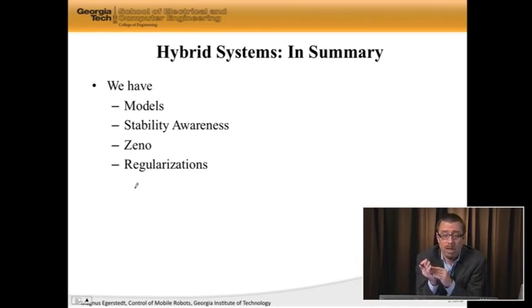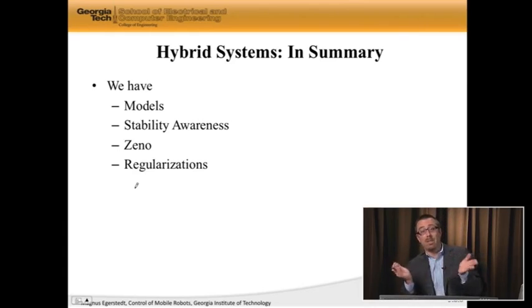We also have seen Zeno as another awkward hybridization that occurs, or an awkward phenomenon that can occur when you go hybrid. We have two classes of Zeno. One, which is type 2, which is the bouncing ball. Infinitely many switches in finite, but not a zero time. That's bad and scary, and we can't do anything about it except look out for it. But then we have type 1, and we now know not only how to check for it, but how to get around it using these things that are called regularizations, or the induced sliding mode.